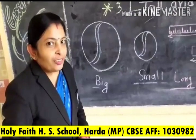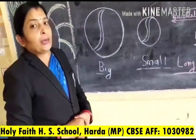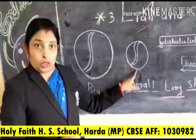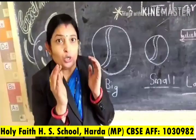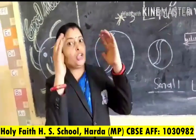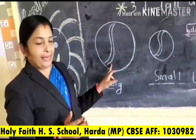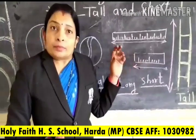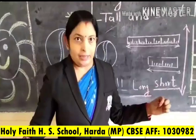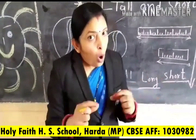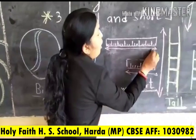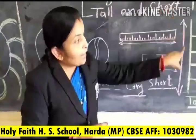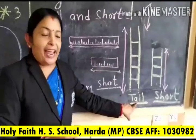Children, did you enjoy? When we compare the object based on size, we will say big and small. When we compare the object based on length — length is generally used horizontally — we will say long and short. When we compare the object based on height, we will say tall and short.